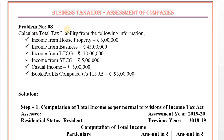Problem number 8. Calculate total tax liability from the following information. Income from house property: 3 lakhs. Income from business: 45 lakhs. Income from long-term capital gain: 10 lakhs.